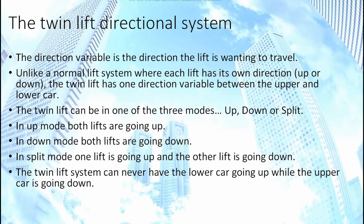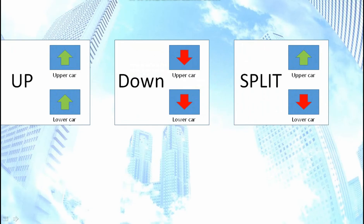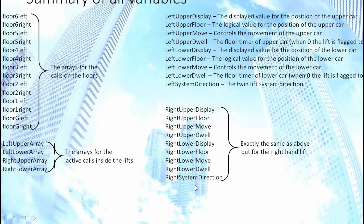The twin lift directional system: the direction variable is the direction the lift wants to travel. Unlike a normal lift where each lift has its own direction, the twin lift has one direction variable shared between the upper and lower car. So the upper and lower cars' direction can either be up, down, or split. In up mode both lifts are going up; in down mode both lifts are going down; in split mode the upper car is going up and the lower car is going down. But at no point can the twin lift have the upper car going down while the lower car is going up — that is simply not allowed.